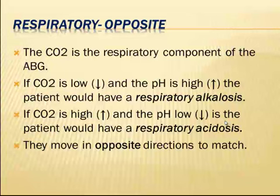Remember that carbon dioxide is the respiratory component of the ABG. If carbon dioxide is the value showing disturbance, it is a respiratory problem. If the CO2 is low (alkalosis) and the pH is high (above 7.45), the patient has respiratory alkalosis. If the CO2 is high and the pH is low, the patient has respiratory acidosis. Notice that CO2 and pH move in opposite directions in respiratory disturbances.